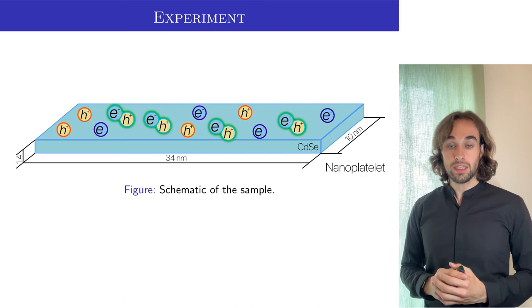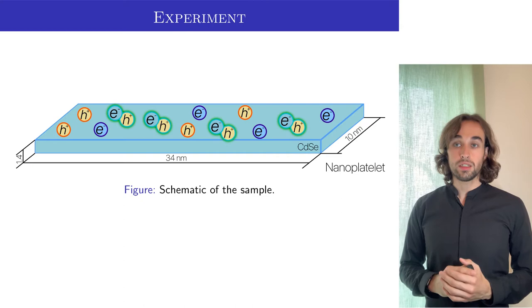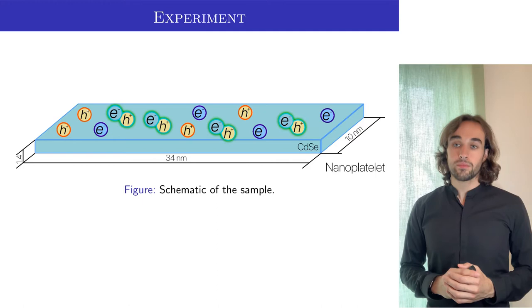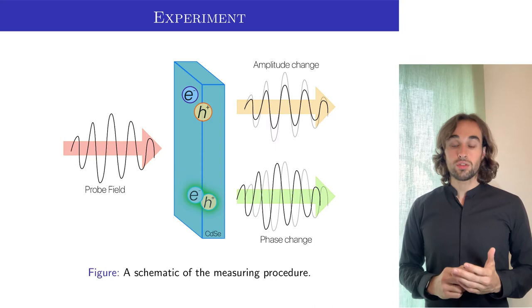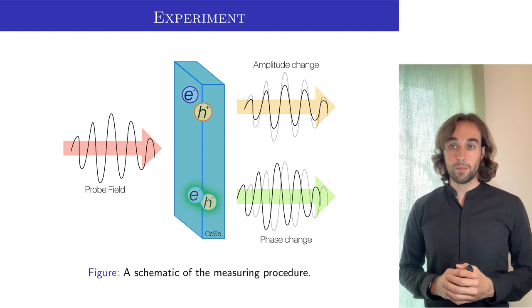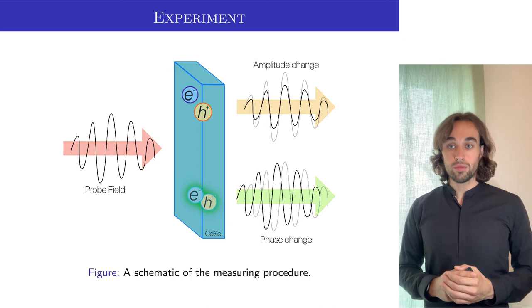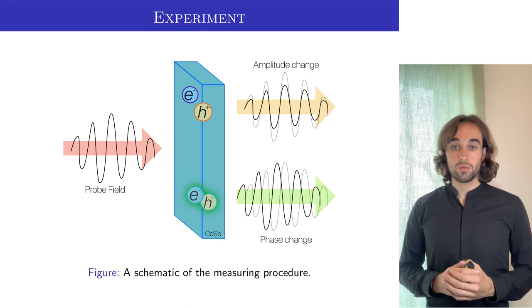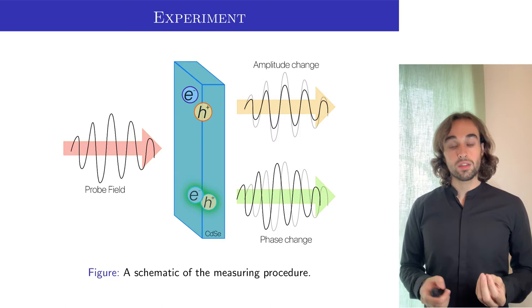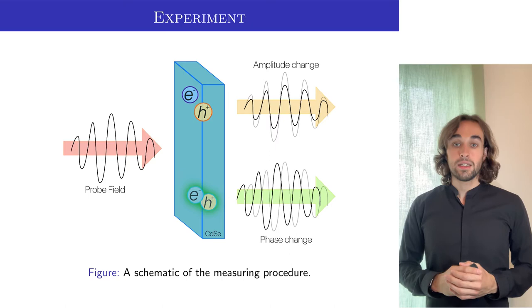Because we cannot directly measure densities of electrons, holes, and excitons, what we are going to do is to use the probe laser to measure a change in complex conductivity of the material. This is so because the complex conductivity depends on the amount of electrons and holes, that is free charges and excitons in the system. While the free charges mainly change the amplitude of the probe field, the excitons also change the phase. So with this information and a separate model that connects the complex conductivity to densities, we can check with the experiment if our theory is correct.